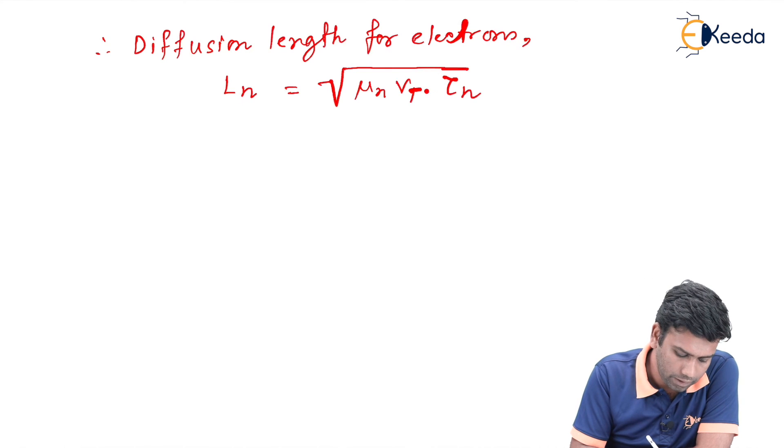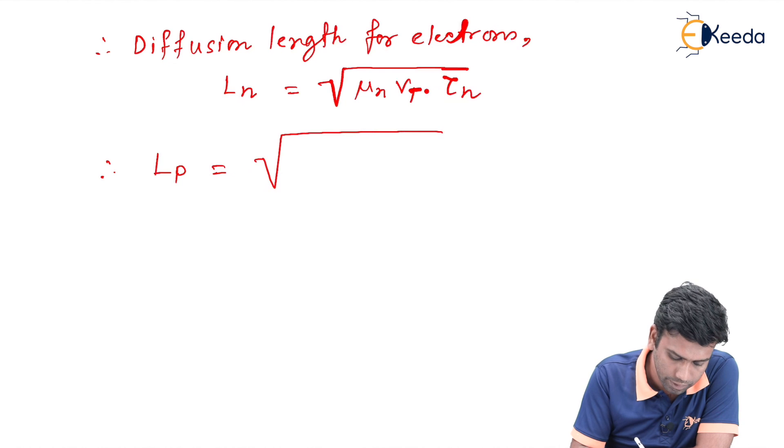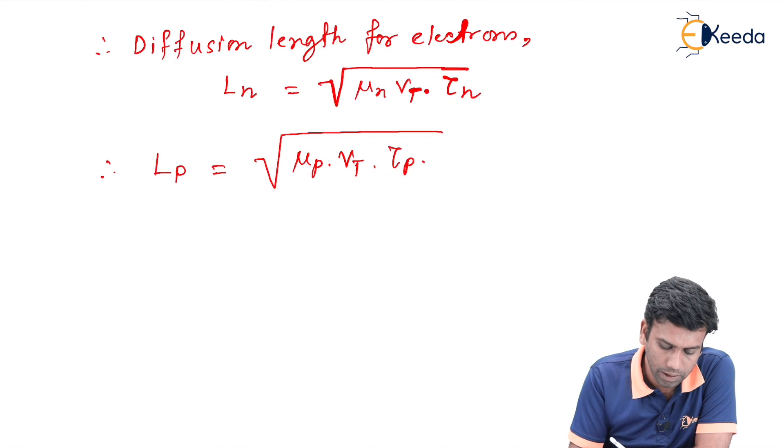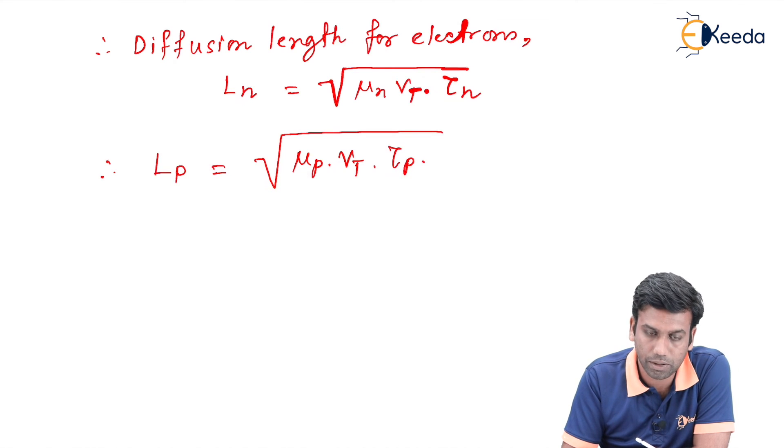Similarly, we can write the diffusion length for the holes, that is Lp. Lp is equal to √(μp·Vt·τp), where τp is the hole lifetime inside the semiconductor and μp is the mobility of the holes inside the semiconductors.